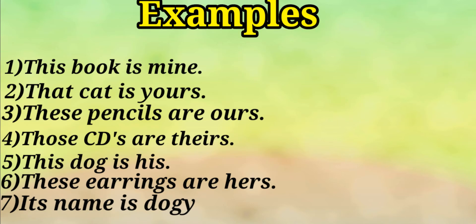Examples. Number one: this book is mine. Number two: that cat is yours. Number three: these pencils are ours. Number four: those cities are theirs. Number five: this dog is his. Number six: these earrings are hers. Number seven: its name is dog.